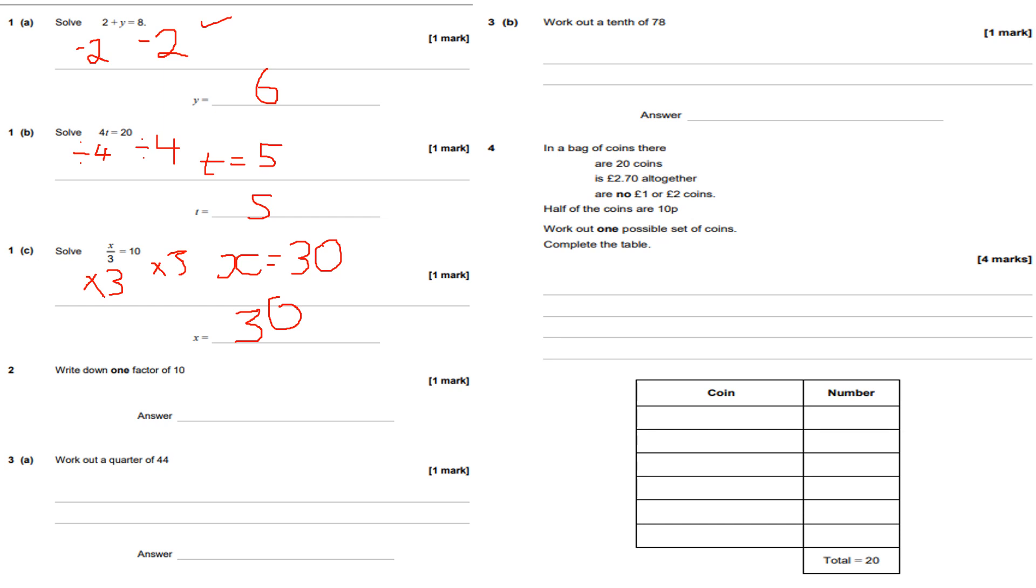Question number two: write down one factor of 10. The word factor means a number or numbers that go into that number cleanly with no remainder. A factor of 10 would be 2. Other answers that would also suffice and be correct are 1, 5, and 10. They all go into the number 10 cleanly with no remainders.